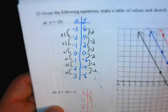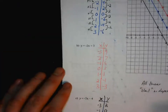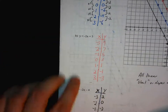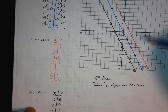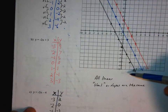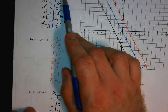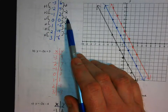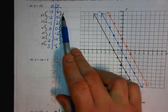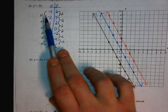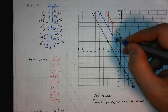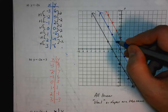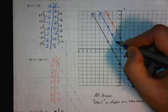Then we had y equals negative 2x, and negative 2x plus 3, and y equals negative 2x minus 4. The only difference there was we had decreasing lines, because the rate of change was negative, which means the y value was decreasing. So when the y value went down by 2, the x value went up by 1 — we're going down 2 to the right 1, instead of up 2 to the right 1.